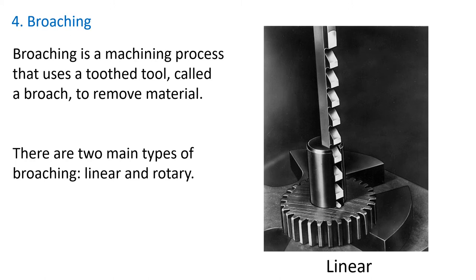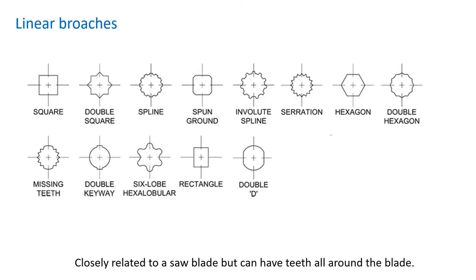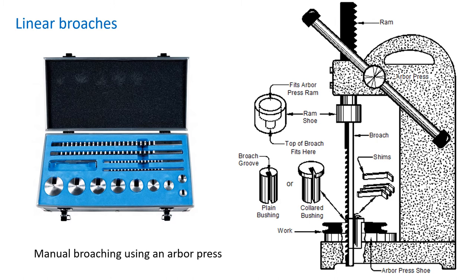Section 4: Broaching. Broaching is a machining process that uses a toothed tool called a broach to remove material. It has a similar cutting action to a saw but is pushed or pulled through or over a workpiece. Broaches are commonly made from high-speed steel and carbide. Linear broaches can produce symmetrical and asymmetrical profiles in pre-drilled through holes — pushed or pulled vertically or horizontally. In this example, an overpress pushes the broach through the part to create a keyway. Broaching shims are used to increase the depth of cut each time the broach passes through the hole.